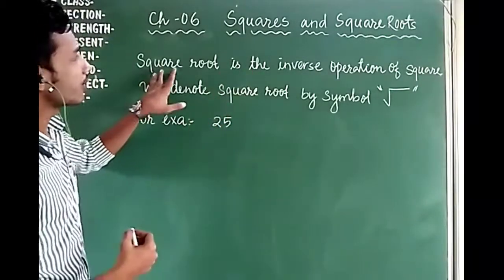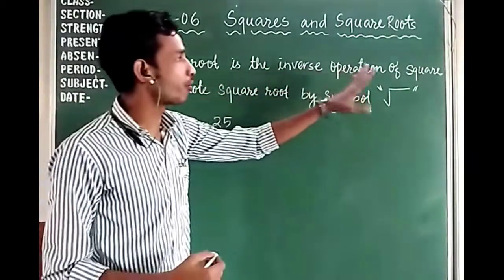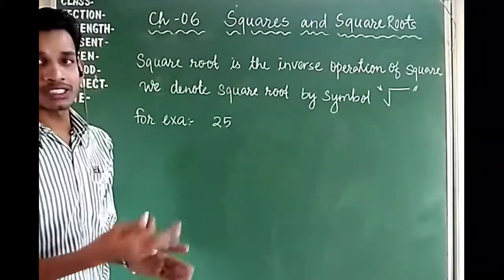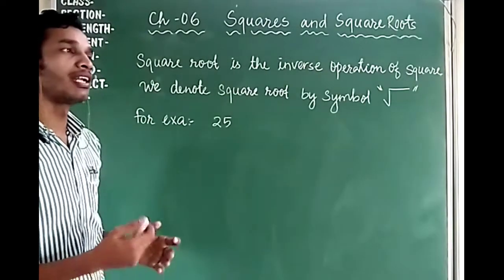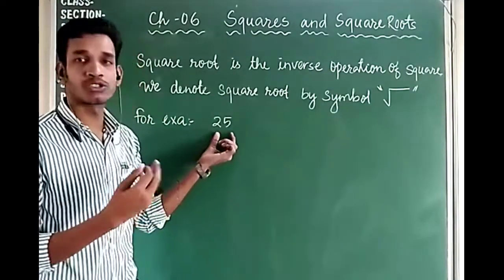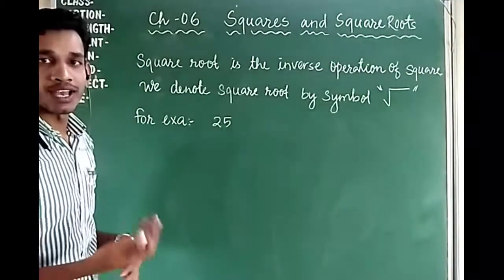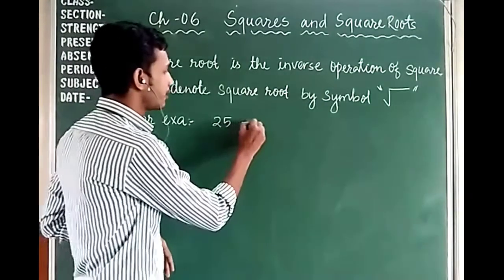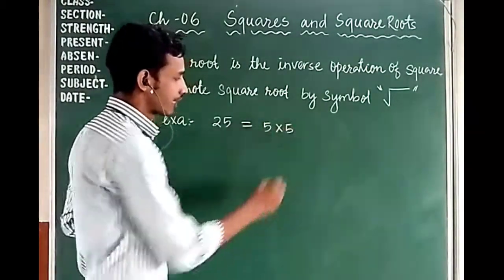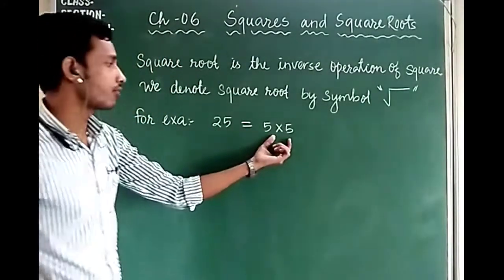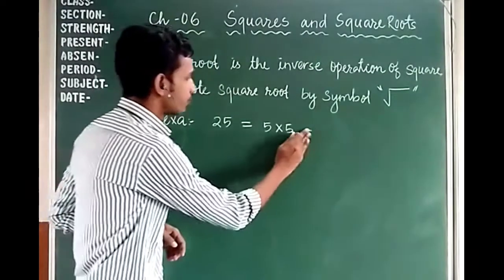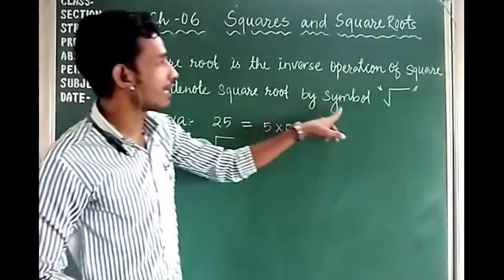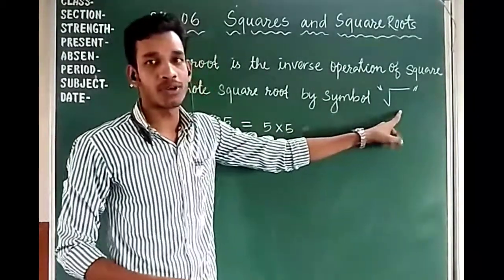Now we will talk about square roots. Square root is the inverse operation of squaring. If you find the square you multiply a number by itself, then the square root is just the opposite. We factorize a square number into the square of some number. This symbol here is the square root symbol, called the under-root or square root symbol.